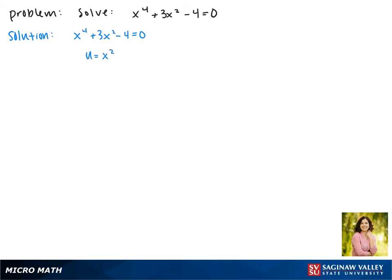So we'll make the substitution u equals x squared. Now when we plug in u, this gives us u squared plus 3u minus 4 equals 0.